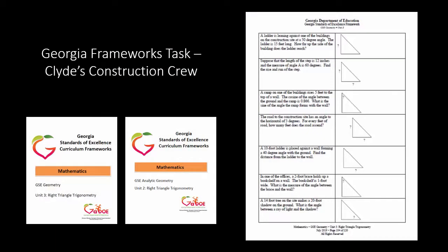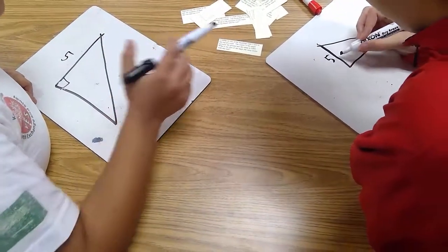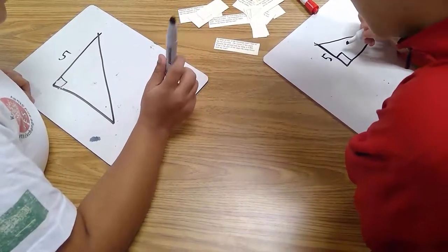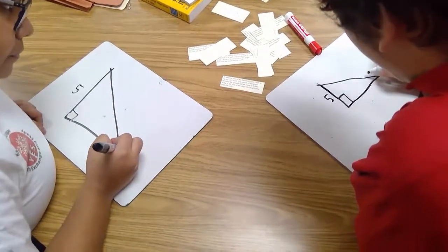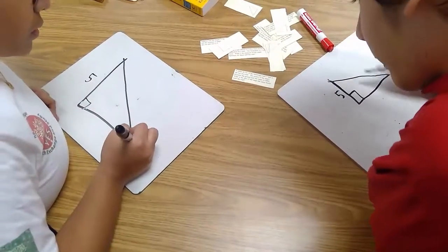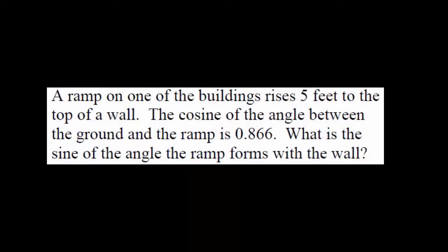In the Clyde's Construction Crew task, students work with a partner to match the given problem to the corresponding right triangle setup. After making matches, students finish labeling the problem and solve using trigonometric ratios. One of the problems given in this task requires application of the relationship between the sine and cosine of complementary angles. A ramp on one of the buildings rises five feet to the top of a wall. The cosine of the angle between the ground and the ramp is 0.866. What is the sine of the angle the ramp forms with the wall?